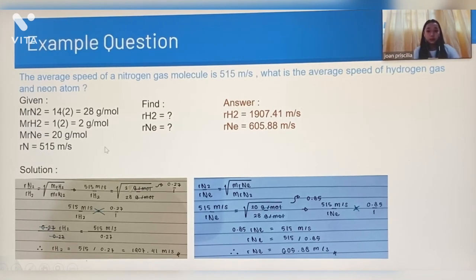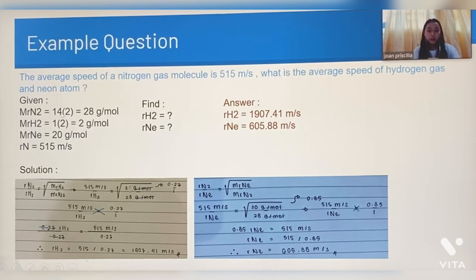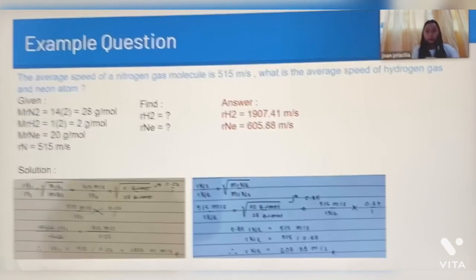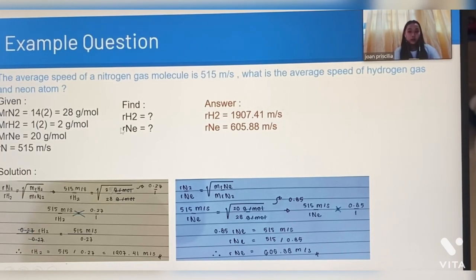Second, we need to find the molecular mass of nitrogen gas, hydrogen gas, and neon atom by looking at the periodic table. The molecular mass of nitrogen is 14 g/mol, and because the formula of nitrogen is N2, we multiply 14 by 2, so the molecular mass of N2 is 28 g/mol. The molecular mass of hydrogen gas is 1 g/mol, and because the formula is H2, we multiply 1 by 2, so M(H2) is 2 g/mol. The molecular mass of neon atom is 20 g/mol.